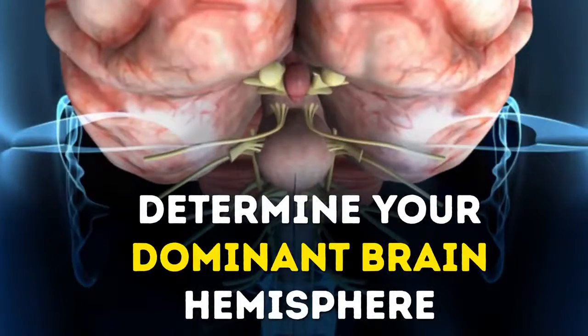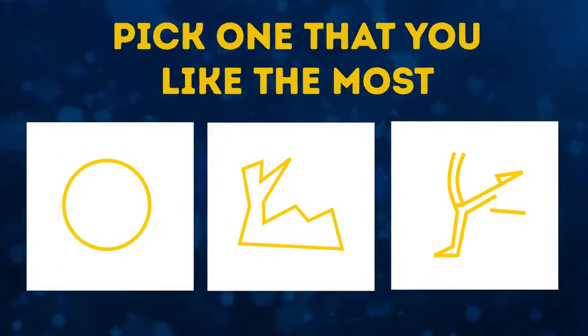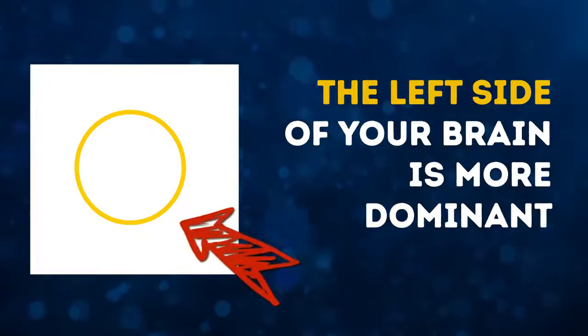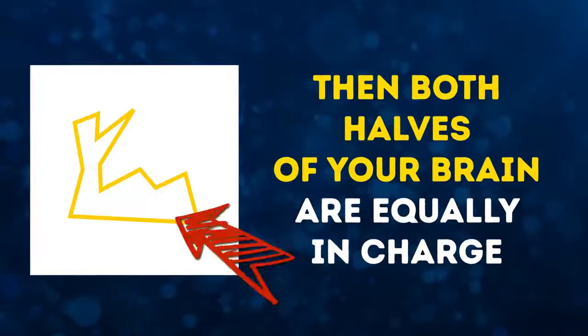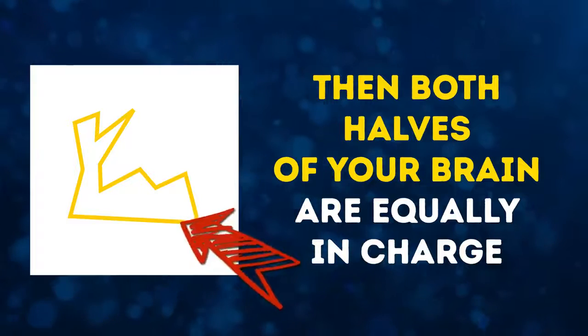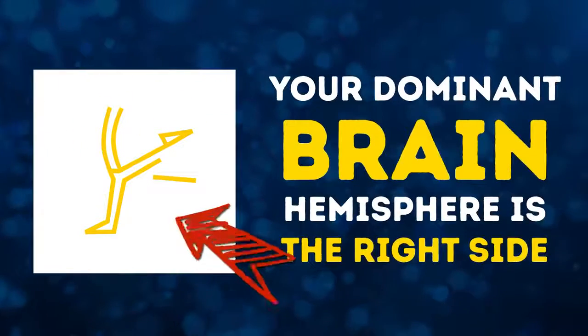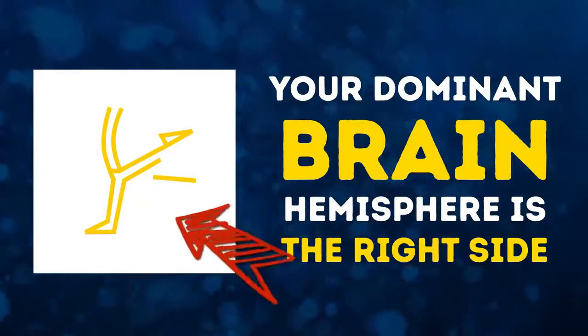Determine your dominant brain hemisphere. Alright, take a look at these three pictures and pick the one that you like the most. Don't overthink it, just go with the first one that caught your eye. If you liked option number one, the left side of your brain is more dominant. The circle is a shape we all know, and you subconsciously chose it for its familiarity. If option two appealed to you the most, then both halves of your brain are equally in charge. It's kind of a middle ground between the simplicity of the first picture and the craziness of the third. If you went for option number three, your dominant brain hemisphere is definitely the right side. This image seems somewhat incomplete, which means there's still room left for your imagination.